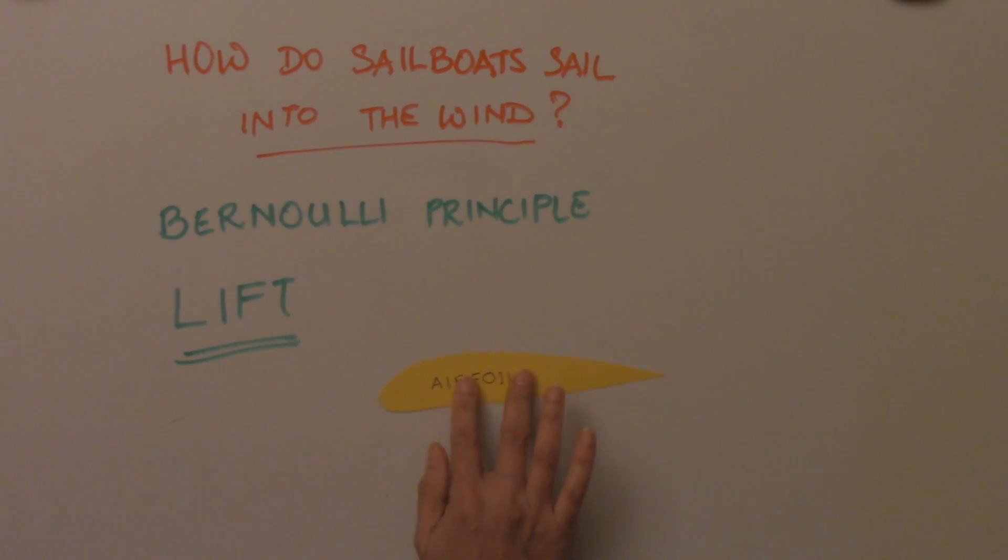This is called an airfoil. As you can see, the top is curved. When the airfoil begins to move quickly through air, because of the curvature of the airfoil, the air on top has to travel a longer distance to get past the airfoil than the air below it. As a result, the air on top moves faster than the air below.